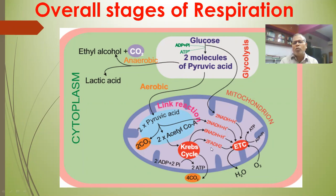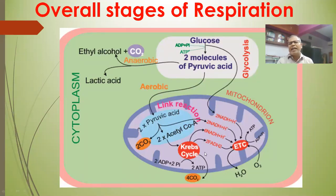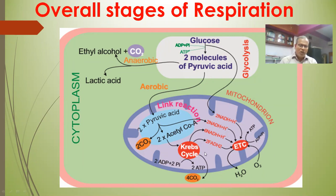Summarizing the first three steps: glycolysis produces 2 NADH₂ and 2 ATP; oxidative decarboxylation produces 2 NADH₂; Krebs cycle produces 6 NADH₂, 2 FADH₂, and 2 ATP. In total, at the end of the third step of aerobic respiration, 10 NADH₂, 2 FADH₂, and 4 ATP molecules are formed.